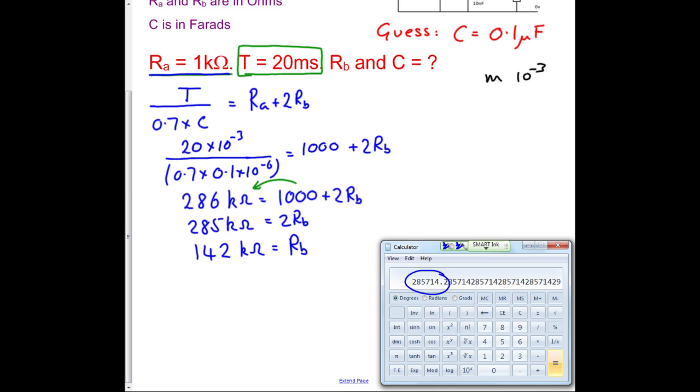So what I would probably write, is I'd probably write something like RB equals approximately 140K, and that would give us a solution. There we go.